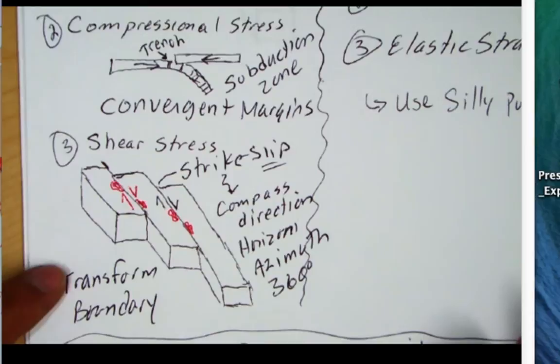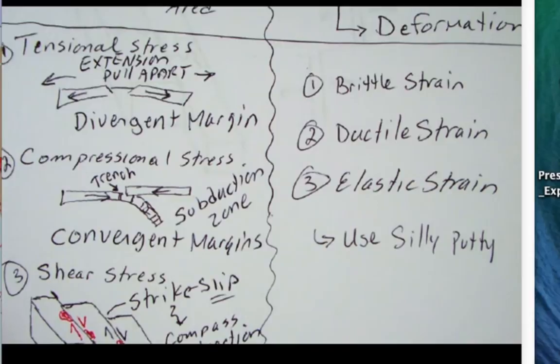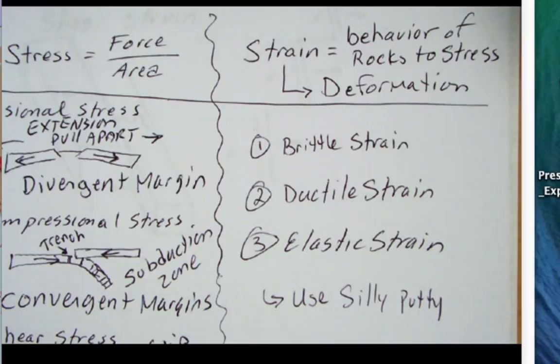The rock will behave in a certain way — it'll deform — and we call that strain. Strain is the behavior of rocks in response to tectonic stress. Rocks could either behave brittlely and break — that's a fault, or brittle strain. Brittle strain is often the result of a rapidly applied stress; if you hit a rock with a hammer, it's going to shatter and break.